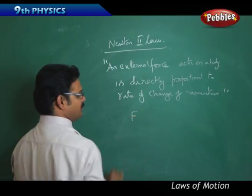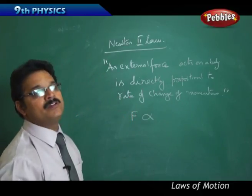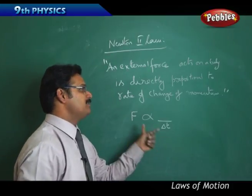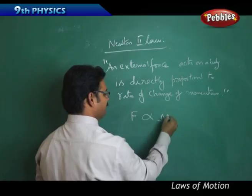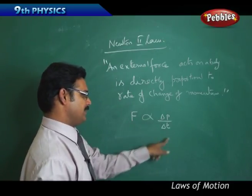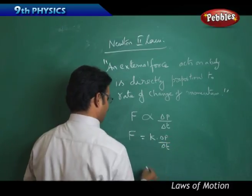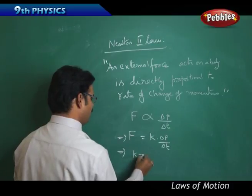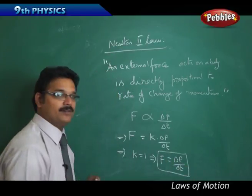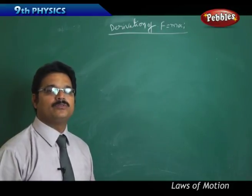Mathematically, F ∝ Δp/Δt, where F is the external force, Δp is the change in momentum, and Δt is the time — since 'rate' always means with respect to time, it comes in the denominator. To remove the proportionality, we introduce a constant k: F = k · Δp/Δt. Isaac Newton later proved that k = 1, so F = Δp/Δt. This is Newton's second law formula.